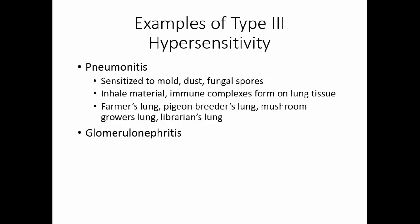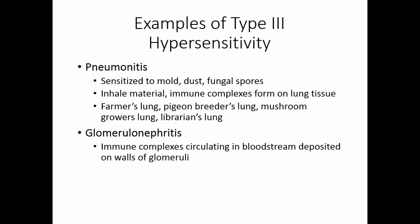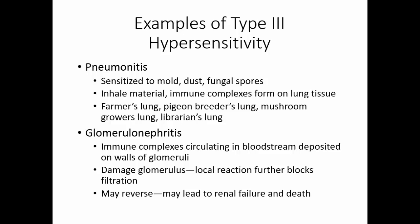Glomerulonephritis is another type of type 3 hypersensitivity. Here, those immune complexes circulating in the bloodstream become deposited on the walls of the glomeruli. This damages the glomerulus, so we have an inflammatory process that starts in the glomerulus. This localized reaction further blocks filtration, and the kidneys may shut down. This can be a temporary situation — once we clear the antigen-antibody complexes, the kidney heals — or it may be permanent, leading to renal failure and death.